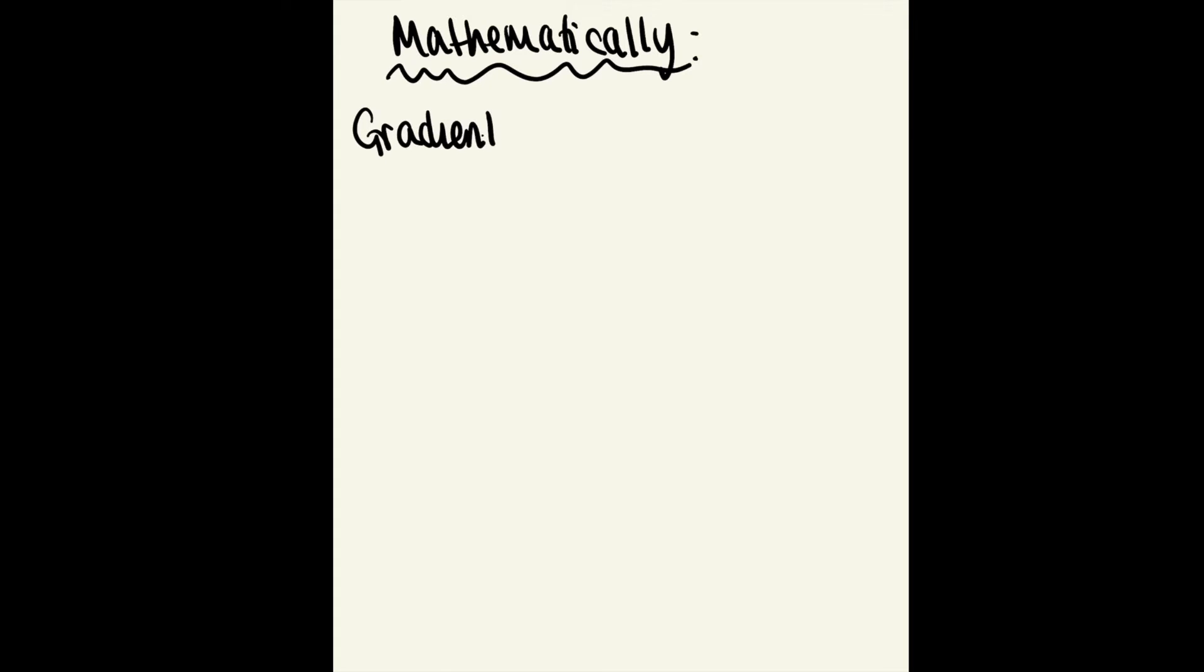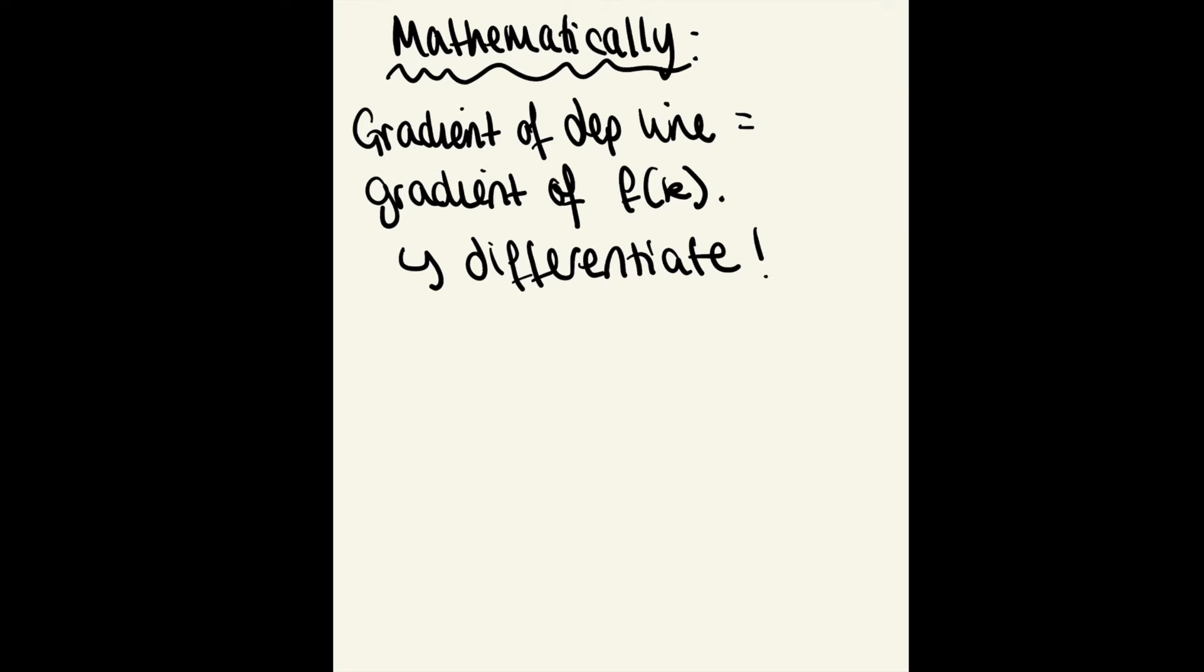Typically your question will be mathematical and you'll calculate what capital stock is in the golden rule. We've made the gradient of the depreciation line equal to the gradient of our production function. We figure gradients out using calculus, which is differentiation. We're going to differentiate both our production function and depreciation equation, set them equal to each other, and rearrange for k.